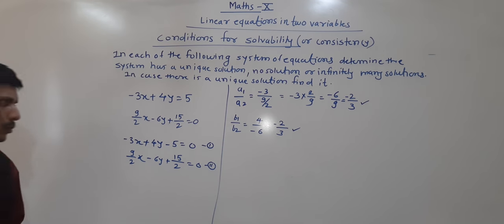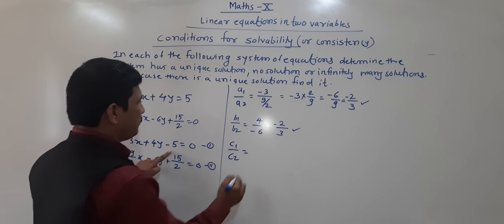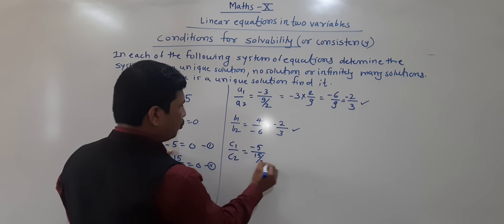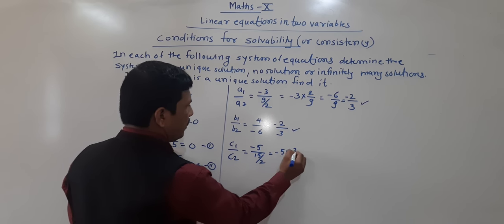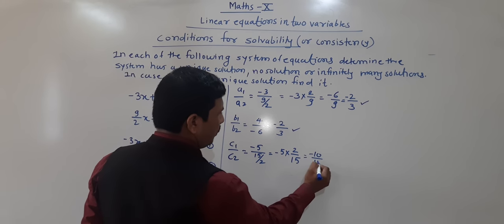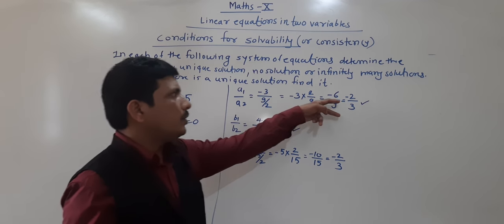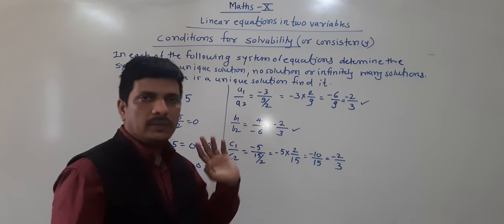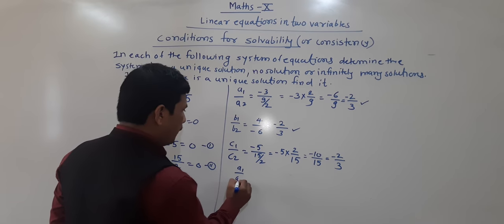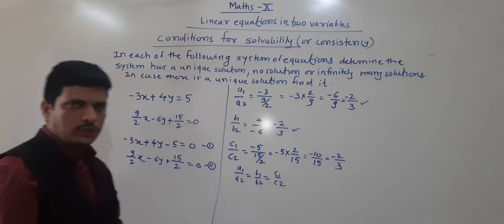Third ratio c1/c2: c1 is −5 and c2 is 15/2. So c1/c2 = −5 ÷ (15/2) = −5 × (2/15) = −10/15 = −2/3. So a1/a2 = b1/b2 = c1/c2 = −2/3. All three ratios are equal.